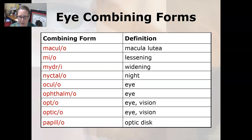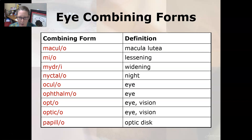Maculo is macula lutea. Myo is lessening. Mydri — with an i — is widening. Nyctalo is night. And then a lot of the following mean eye: oculo and ophthalmo mean eye, and opto and optico mean eye or vision.